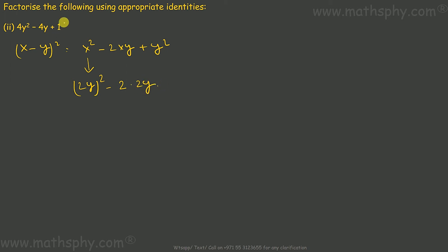This 4y² - 4y + 1, it means this term can be written as (2y - 1)².